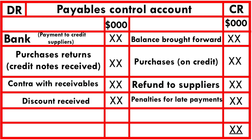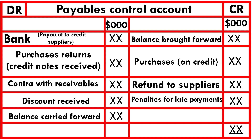At this point, if you sum up the figures on the credit side and deduct the totals on the debit side, you end up with a balance to be carried forward to the following year.